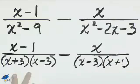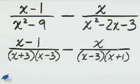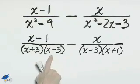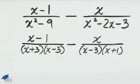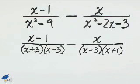The least common denominator is the product of all the different factors in these denominators. We have x plus 3, x minus 3, and x plus 1. So the LCD is x plus 3, x minus 3, x plus 1.